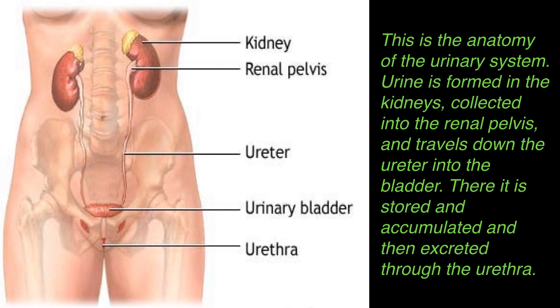This is the anatomy of the urinary system. Urine is formed in the kidneys, collected into the renal pelvis, and travels down the ureter into the bladder. There it is stored and accumulated and then excreted through the urethra.